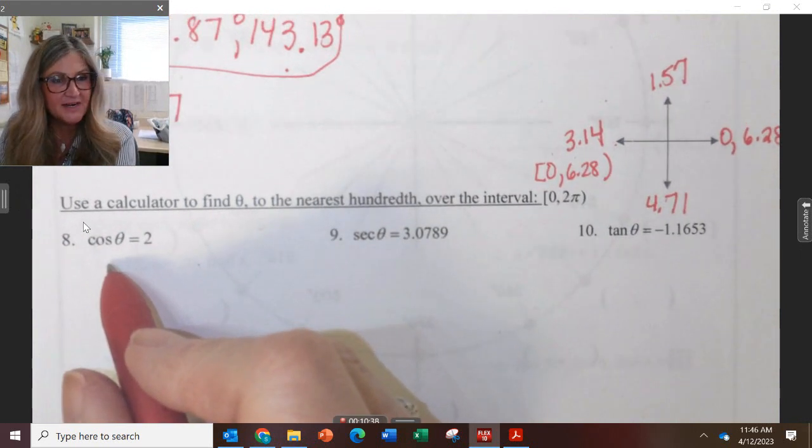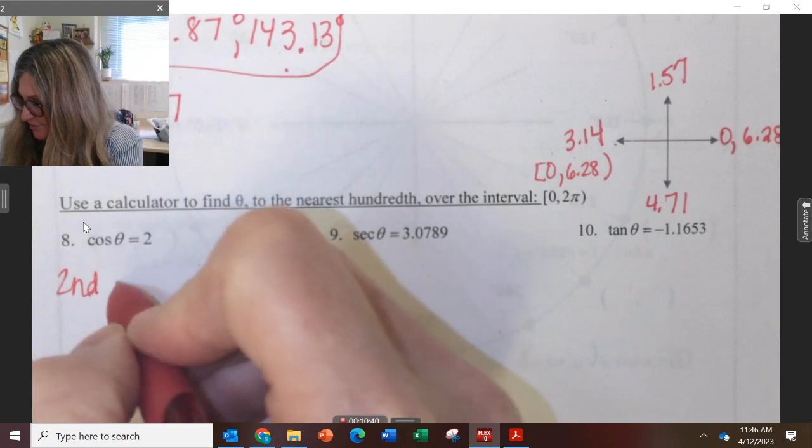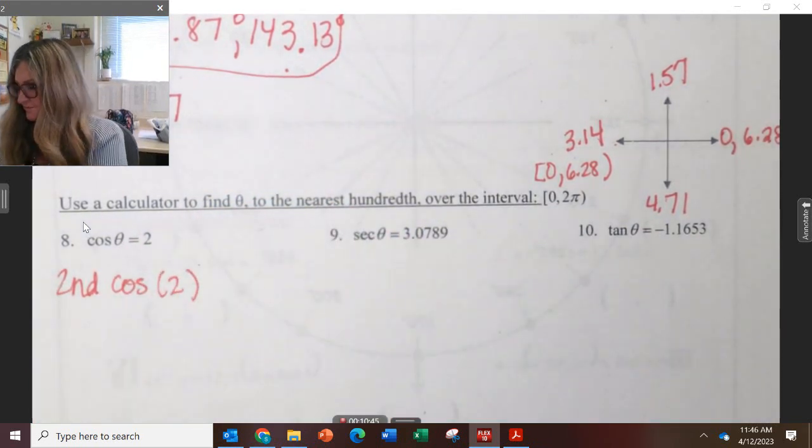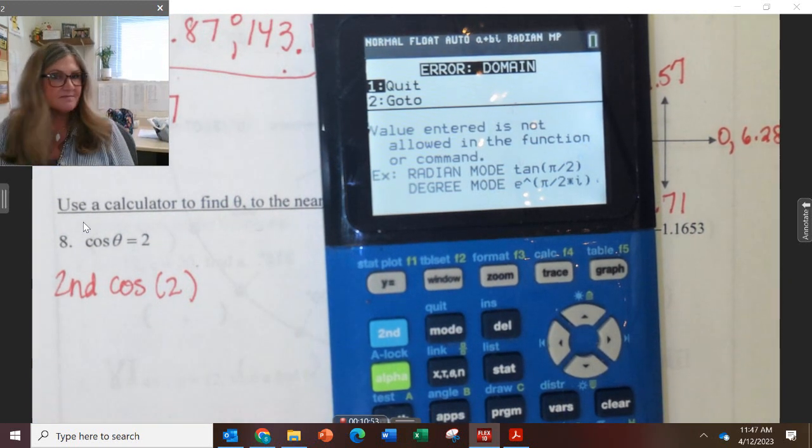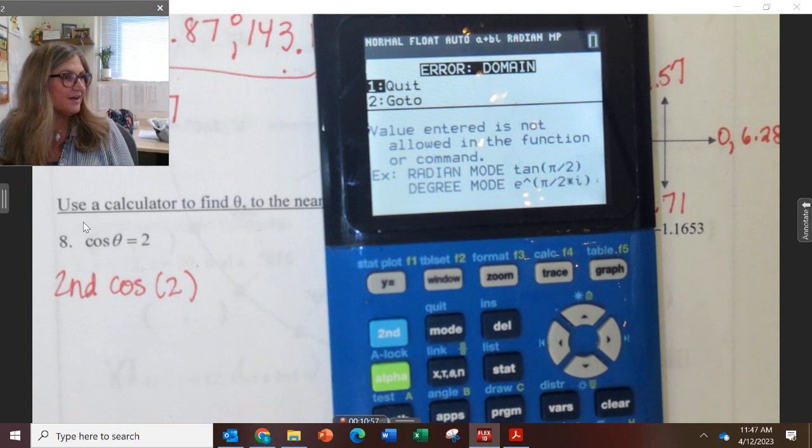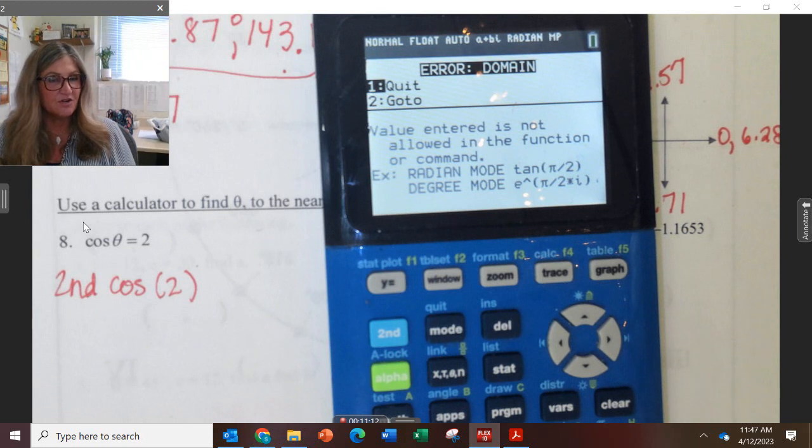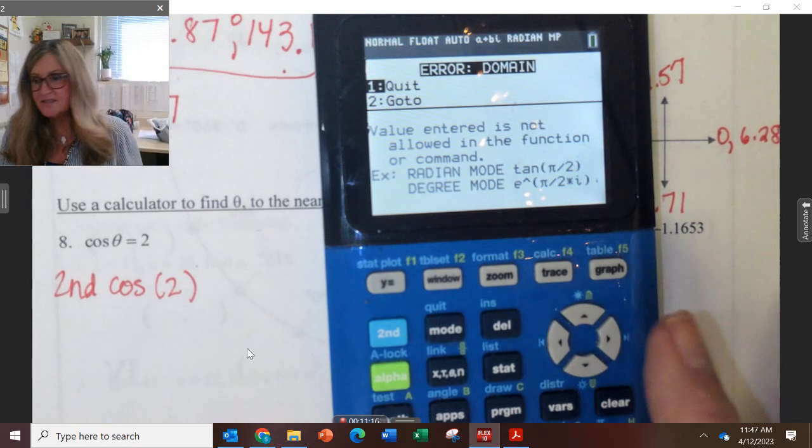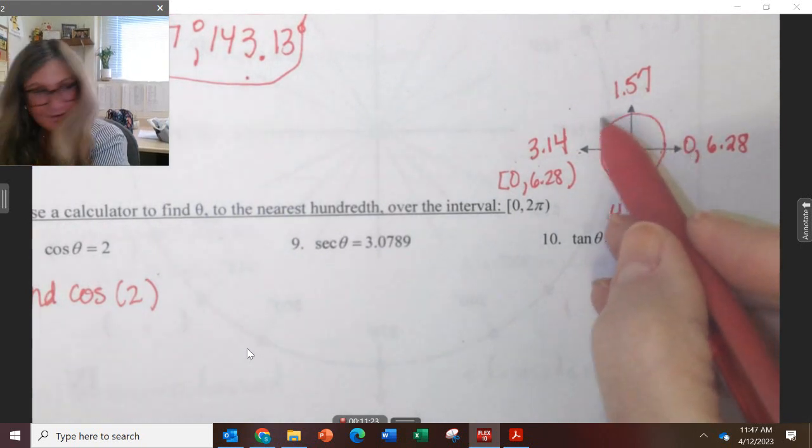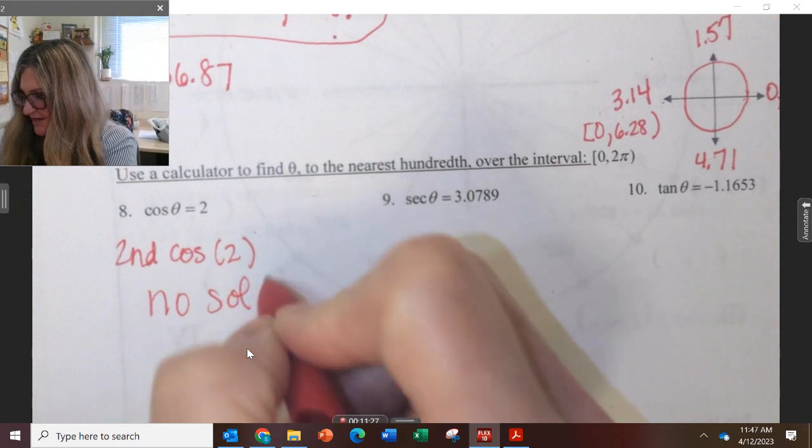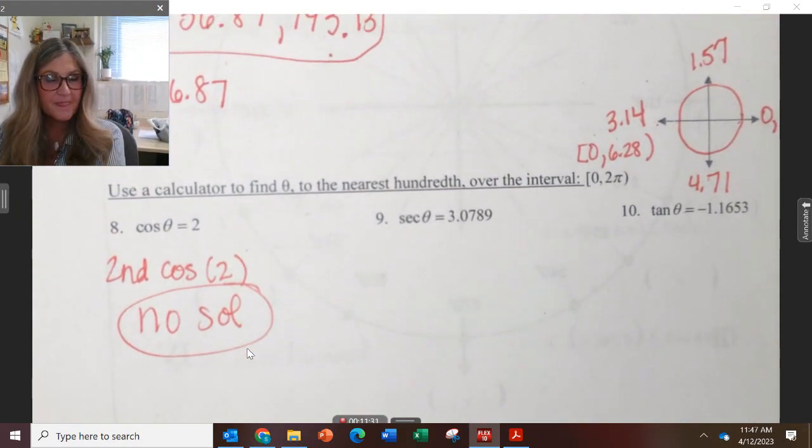And then to find this angle, I'm going to have to type in second or inverse cosine of 2. Now I want to show you what happens here. Second cosine 2. Look what happens. Why do you think I'm getting this happening here? What do all the cosine values on the unit circle have to be in between? Negative 1 and positive 1. Every point on the unit circle has to be in between there. Because remember how when we have the unit circle, the radius is 1 and we just keep going around it. So therefore, this is going to have no solution.